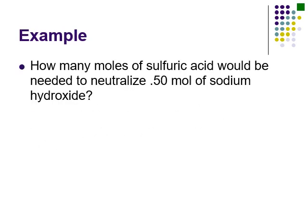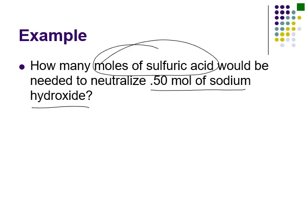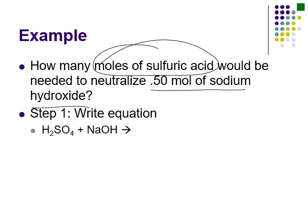Let's look at a titration math example. In a neutralization, we're looking for equal moles of acid and base reactants — it's really a stoichiometry problem. How many moles of sulfuric acid would be needed to neutralize half a mole of sodium hydroxide? First, write down the equation: H₂SO₄ plus NaOH. Since we're reacting an acid with a base, one product is always water, and the other is the salt — sodium sulfate. Sodium has a plus-one charge, sulfate is two-minus, so we need two sodiums.